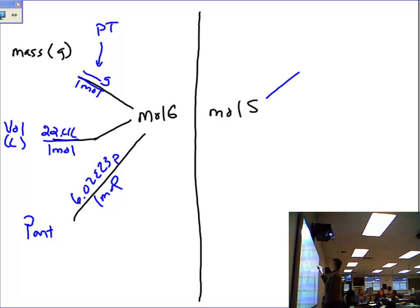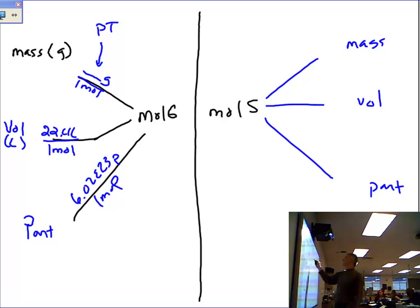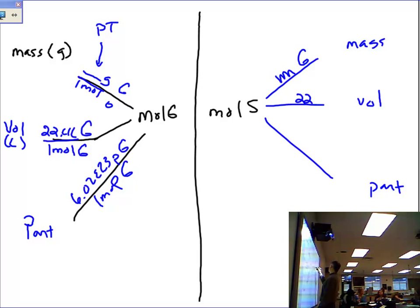And if you're going to go to particles, you're going to use 6.02 E23 particles in one mole. And now we've got three more, and it's just a mirror image. So what goes on the mirror image? We'll have mass, volume, and particles. Actually, let me say this. This is mass of your G. And this would be, use the molar mass of the given. This is your sought. And then 6.02 E23 particles of sought in one mole of sought.